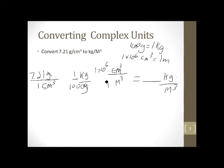We punch these into the calculator. Seven point two one divided by a thousand. That answer times one times ten to the sixth. And we get seven, two, one, zero kilograms per cubic meter. Or in scientific notation, seven point two one times ten cubed. And there we go.